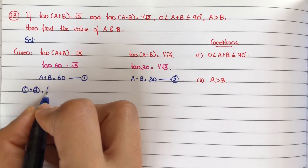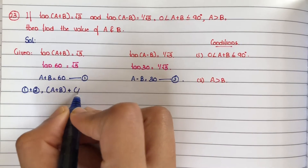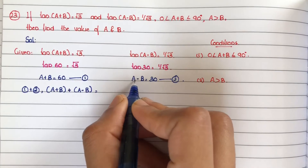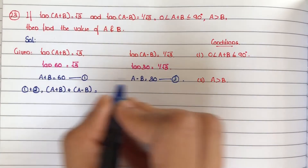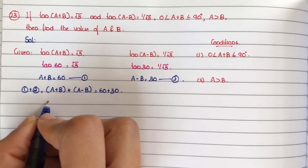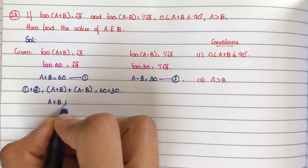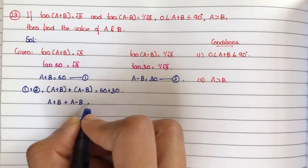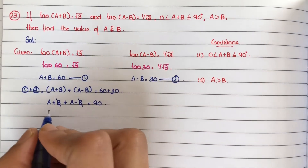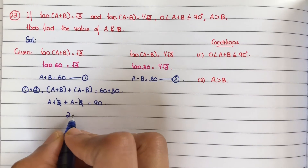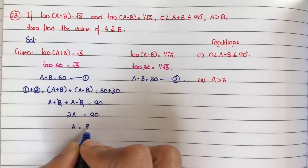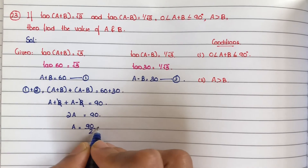Adding equation 1 and equation 2: LHS is (a+b) + (a-b), and RHS is 60 + 30. On the left side, +b and -b cancel out, giving 2a. So 2a is equal to 90, therefore a is equal to 90 divided by 2, that is 45 degrees.